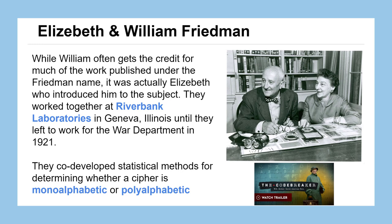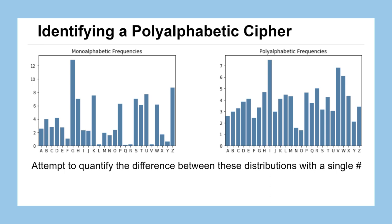The method they developed, the Index of Coincidence, was instrumental in determining whether a particular ciphertext message was encrypted using a monoalphabetic cipher like the Caesar or the affine, or a polyalphabetic cipher like the Vigenère or the Auto Key.